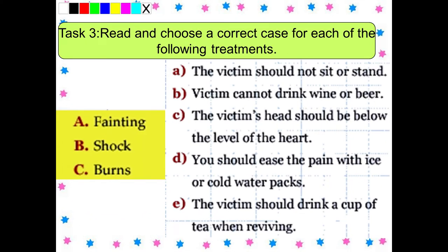Now we move on to task 3. Read and choose the correct case for each of the following treatments. We have 3 cases: fainting, shock, and burns. Ở task 3 các bạn đọc và chọn những trường hợp đúng cho mỗi cách chữa trị sau: trường hợp thứ nhất bị ngất, thứ hai bị choáng hoặc bị sốc, thứ ba bị bỏng. Các bạn đọc kỹ những câu A, B, C, D, E để chọn cho đúng. Các bạn có 1 phút để làm bài tập này.